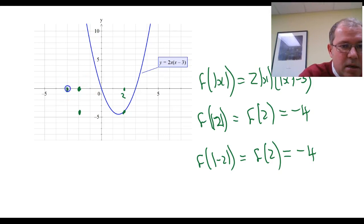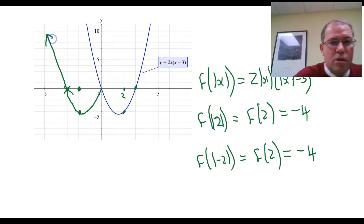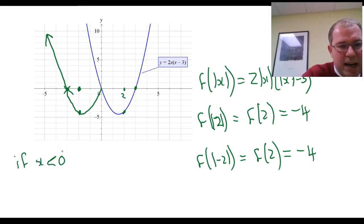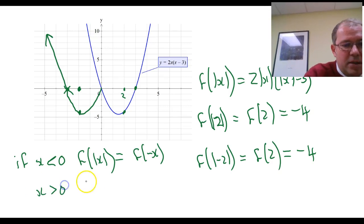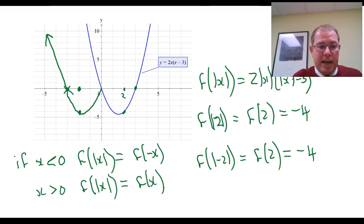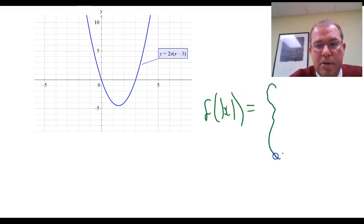When I input minus 3, it makes it positive and gives the same output. So you can see that when inputting negative x values, I get a reflection across the y-axis. So f of absolute value of x — we know from earlier work that a reflection across the y-axis can be written as f of minus x. If x is positive, then f of absolute value of x is identical to f of x, since taking the absolute value of positive numbers doesn't change them. So we can get this transformation written as a piecewise function for any function, and in particular this one.